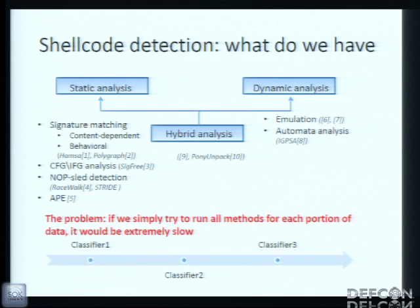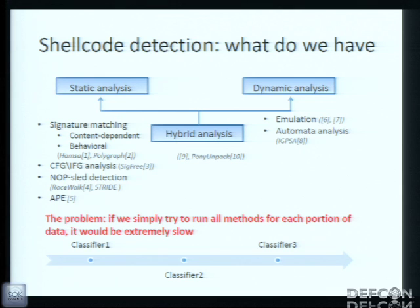What do we have amongst all shellcode detection methods? Mostly it exists in research papers only. As for tools described in research papers, we can divide them into two classes. There are static analysis methods, dynamic analysis methods, and hybrid also. The most common techniques used by static analysis are signature matching, control flow graph analysis, instruction flow graph analysis, NOP-sled detection, and methods of abstract execution. Dynamic analysis methods are represented by emulation and automatic analysis techniques.